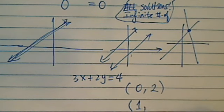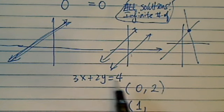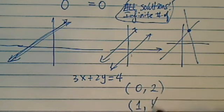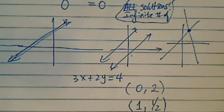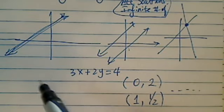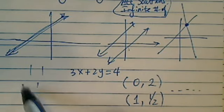If I want x to be 1, then I have 3 times 1, and 4 minus that number is 1. So I have a half - that's also a solution. The list goes on and on. So for this particular problem, you have an infinite number of solutions. Have a confident day.